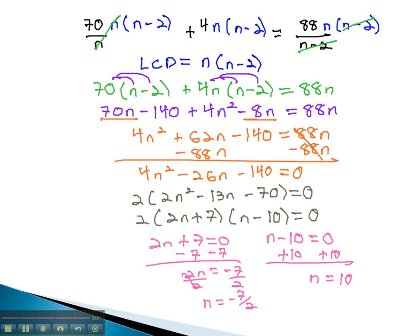You may remember this is the number of pieces of silk the merchant bought. He couldn't have bought a negative amount, so he must have bought 10 pieces of silk. And this completes the problem.